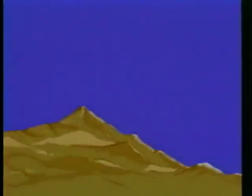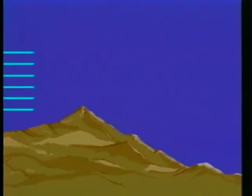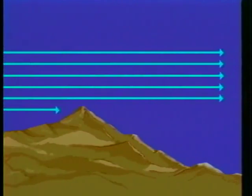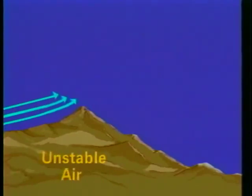Another form of turbulence occurs near mountains. It develops when the air is stable and winds in excess of 40 knots are flowing horizontally over mountain ridges. However some turbulence may develop when the winds blowing over the ridges exceed 25 knots. If the air is unstable the air on the windward side of the ridge will probably be extremely turbulent.